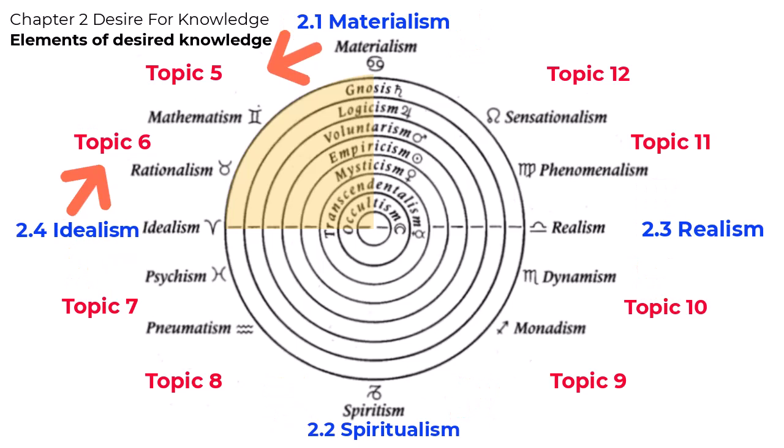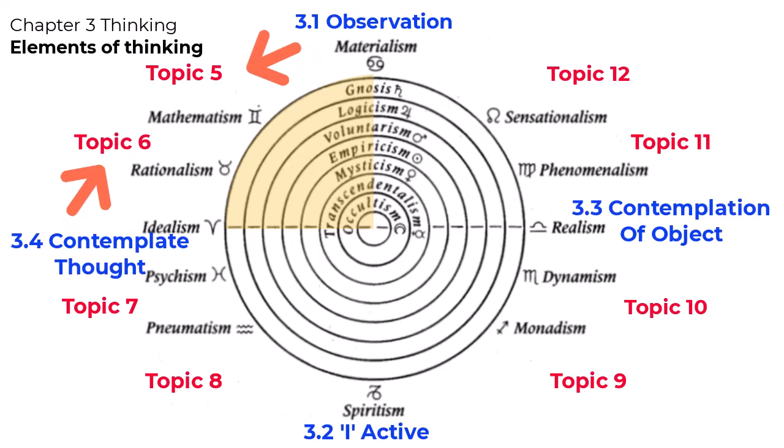Here are the four main topics of Chapter 2, The Desire for Knowledge. The main elements of desired knowledge are materialism, spiritualism, realism, and idealism. In Chapter 3, on thinking, the four main elements of thinking are observation, the I as active, contemplation of an object, and contemplation of thought. So you can see why each topic in the Philosophy of Freedom has to be what it is, where it is, and in a certain sequential order.